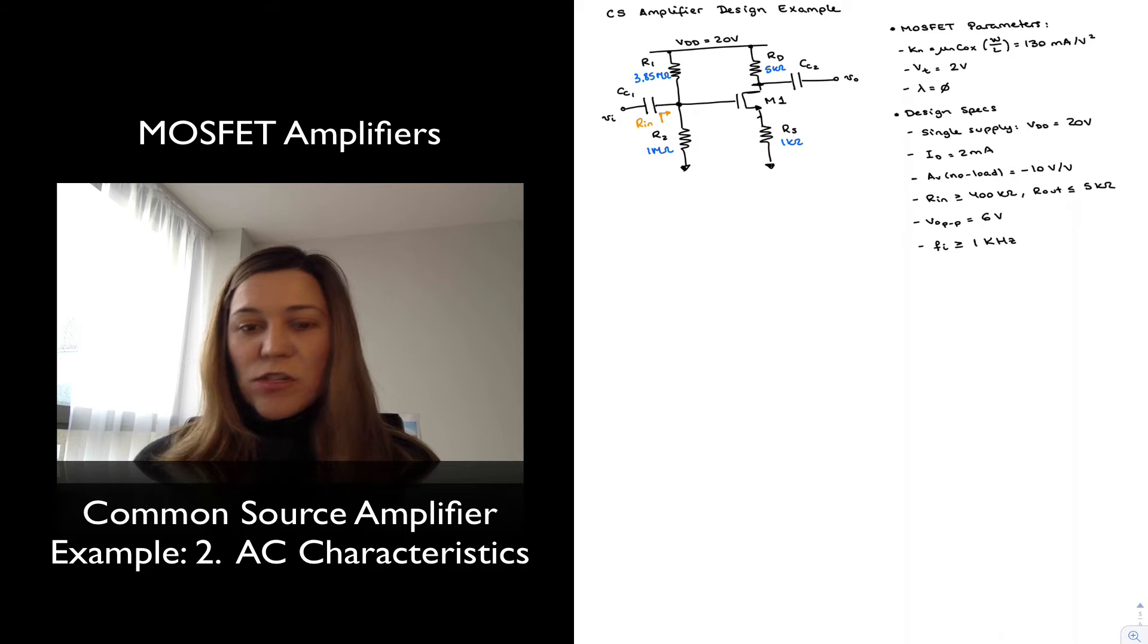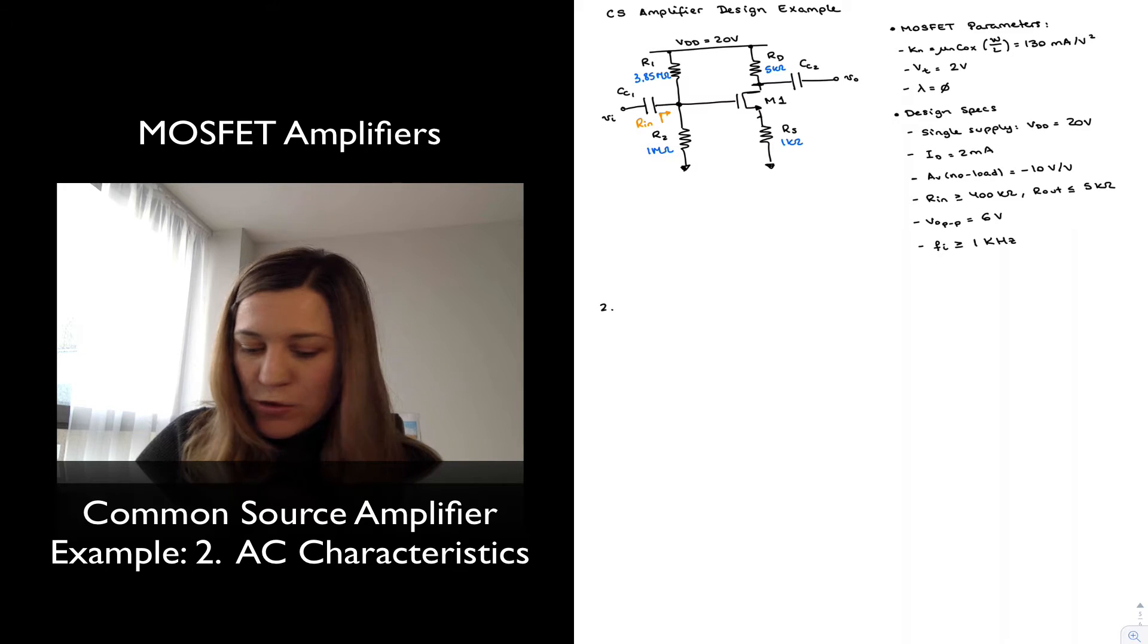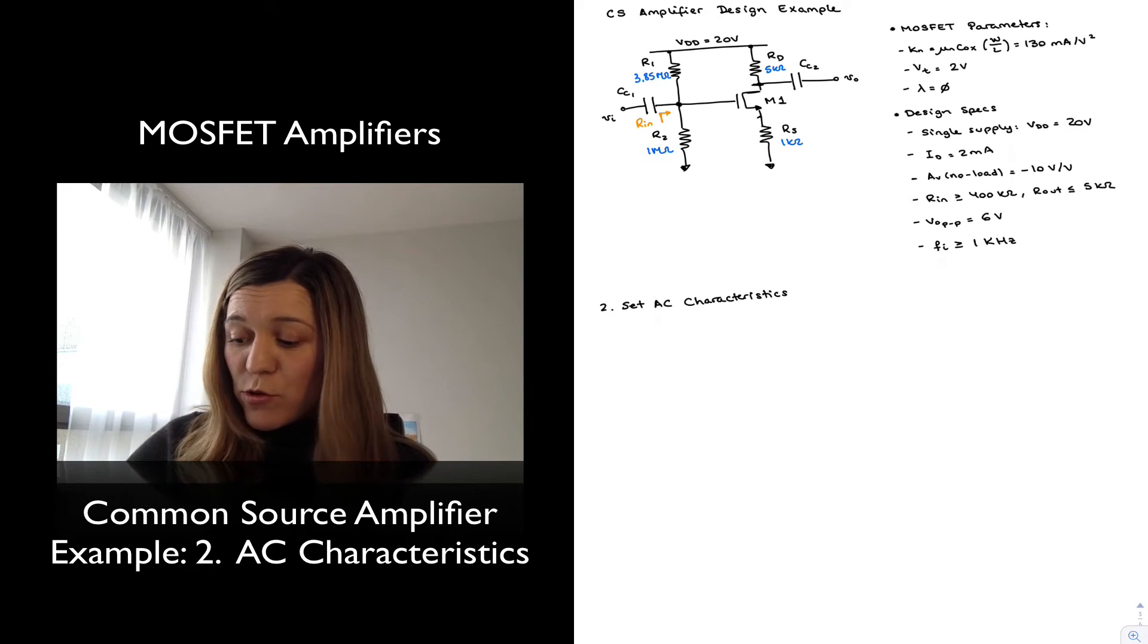Hello. So we have just completed the DC biasing portion of our design for our common source amplifier and now we're going to proceed with the AC portion of the design, basically setting the AC characteristics for our circuit. That will be step number two, setting my AC characteristics, or the AC portion of my design.